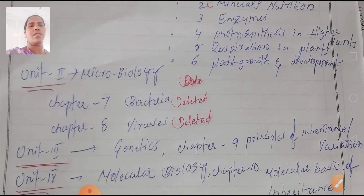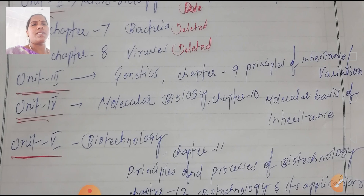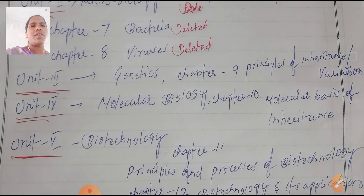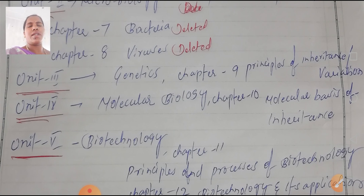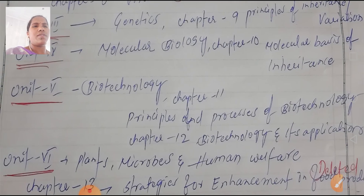Unit 2 is Microbiology — Sukshma Jeeva Shastra. Chapter 7 and Chapter 8 are deleted. Unit 3 is Genetics, Chapter 9: Principles of Inheritance and Variations. Unit 4 is Molecular Biology — Anu Jeeva Shastra, Chapter 10: Molecular Basis of Inheritance. Unit 5 is Biotechnology — Chapter 11: Principles and Process of Biotechnology, Chapter 12: Biotechnology and Its Applications. These are very important chapters.